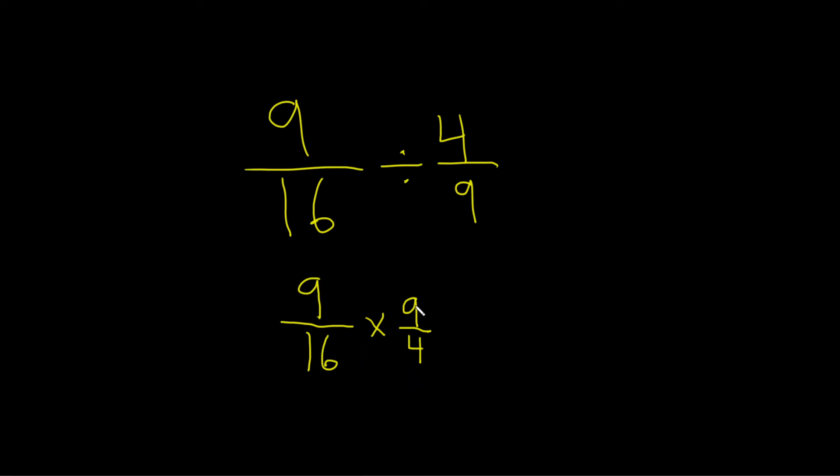So let's look at the 16 and the 9. Looks like I don't think anything can go into both. I mean, 3 goes into 9, but it doesn't go into 16. 2 goes into 16, but it doesn't go into 9. So I think we're out of luck. Likewise, if we look at the 4 and the 9, no cancellation there.